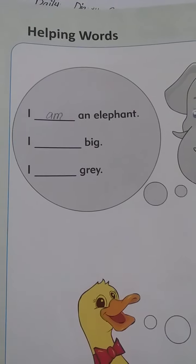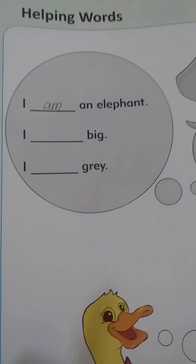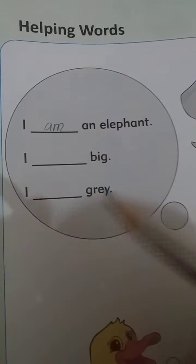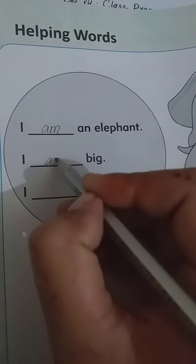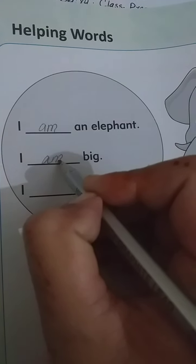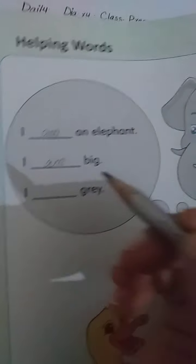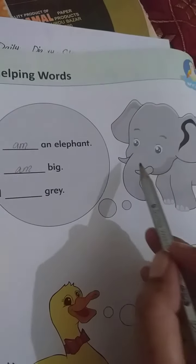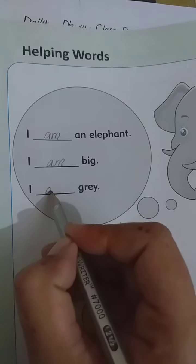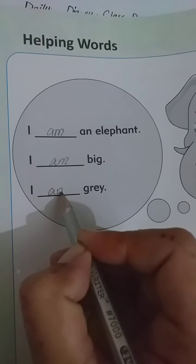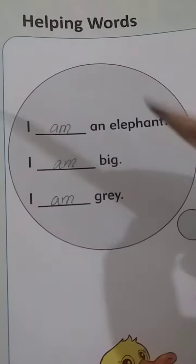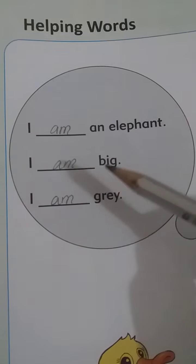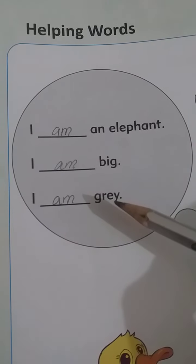I am an elephant. I dash big — I am big. I dash grey — I am grey. I am an elephant, I am big, I am grey.